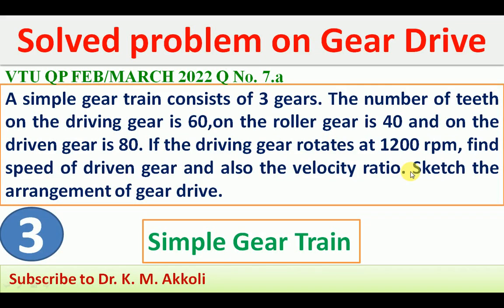The problem is that a simple gear train consists of 3 gears. The number of teeth on the driving gear is 60, on the roller gear is 40, and on the driven gear is 80. If the driving gear rotates at 1200 RPM, find the speed of the driven gear and also the velocity ratio, and sketch the arrangement of the gear drive.